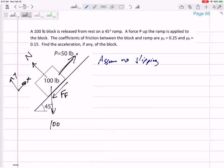I'm going to rotate my axes. Sum of the forces in the X direction: 50 minus force of friction. Notice I'm not putting μk in, I'm not putting μs in, I'm just putting Ff because I'm assuming no slipping.